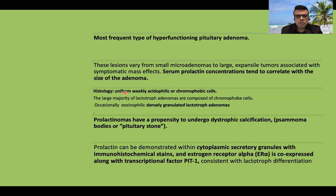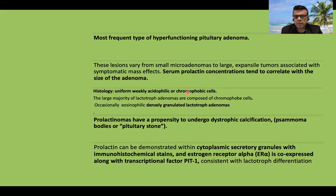Histologically, prolactinomas are composed of uniformly weakly acidophilic or chromophobic cells. Chromophobic means relatively pale staining. There are three types of pituitary cells: acidophilic, basophilic, and chromophobic. Chromophobes are generally pale-staining cells, in contrast to the acidophilic, eosinophilic, and basophilic staining cells.